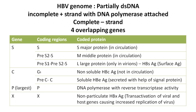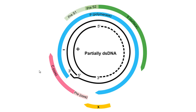To further simplify this, a diagram shows a schematic of the partially double-stranded DNA. The incomplete strand is the plus strand and the complete strand is the minus strand; both carry the four overlapping genes. Starting with S, it has pre-S1, S2, and S. Then the C gene with pre-C and C. Then the largest gene, P, shown in blue, and finally the X gene.